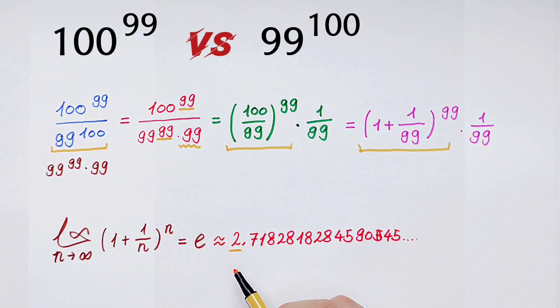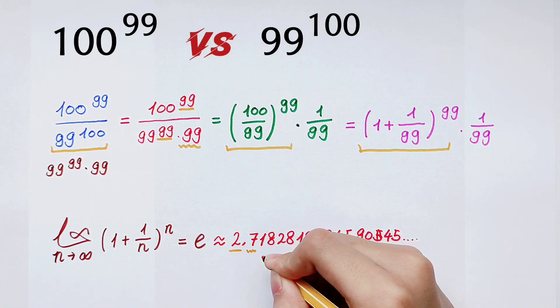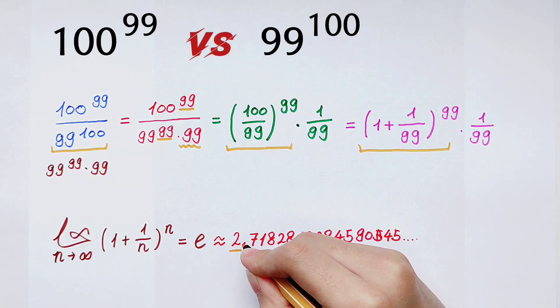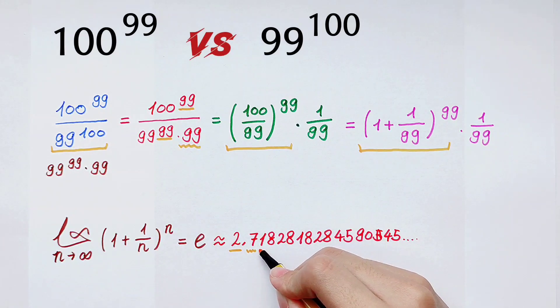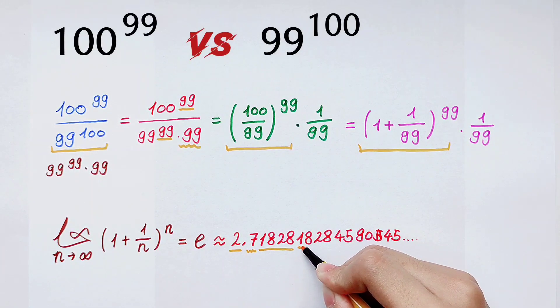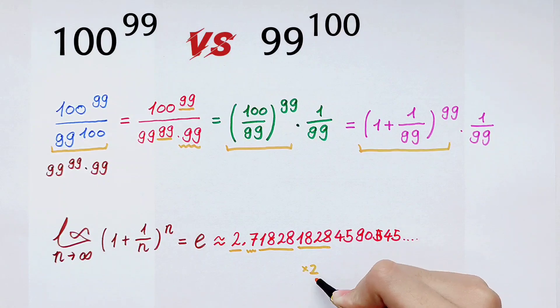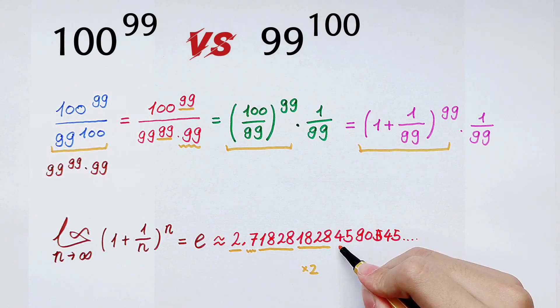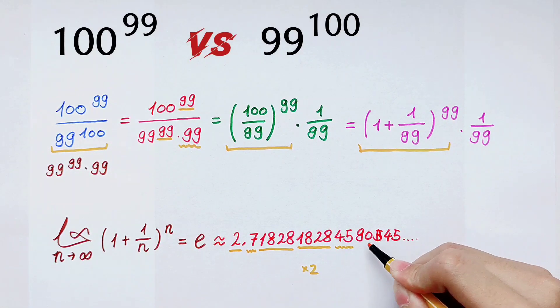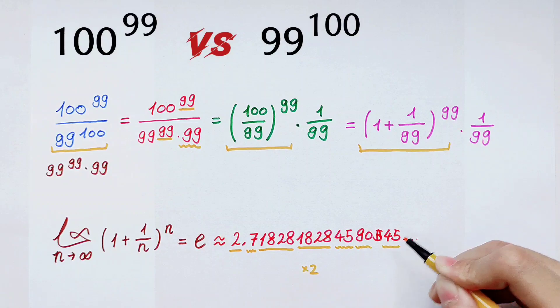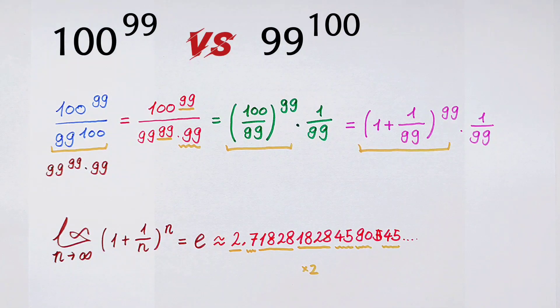2 is the integer part, and 7 is the first digit after the decimal point. And then 1828... and then 459045. So it's easy to remember that, because we've already known that the limit when n tends to infinity of (1 + 1/n)^n equals e, the number e.